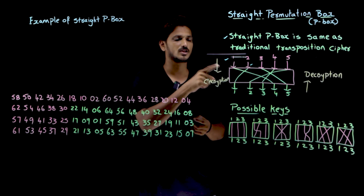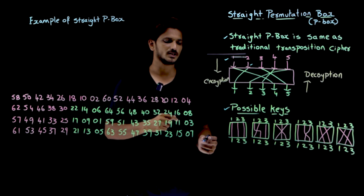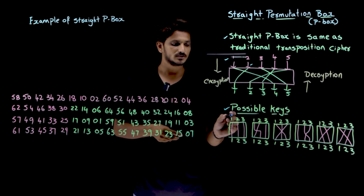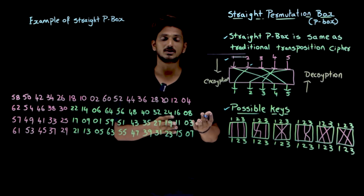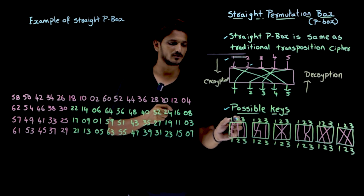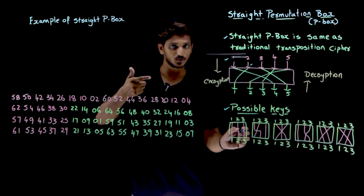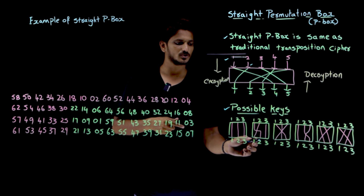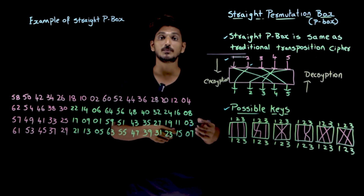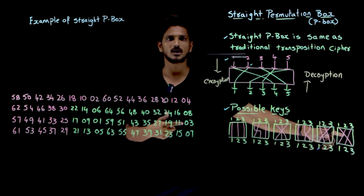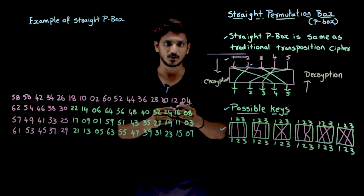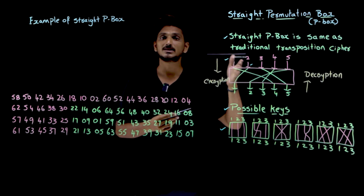So how many possible keys are there for this transposition? If you are taking three bits, there are three factorial possibilities — permutations. Three bits can be arranged in three positions in 3! = 6 ways, which we discussed in discrete mathematics under permutations and combinations. For example: one→first, two→second, three→third is one key; one→two, two→one, three→third is another key — and so on, giving six total possible keys. In general, if you have n bits, n factorial keys are possible.